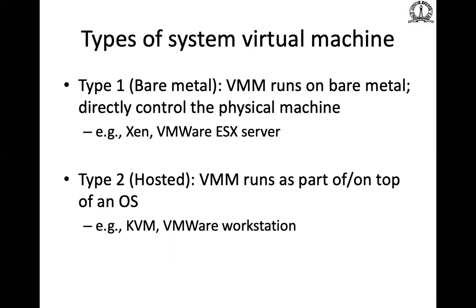There are two kinds of virtualization: bare metal and hosted. Bare metal runs directly on hardware — examples include VMware ESX Server and Xen — and is used in server environments. Hosted virtualization gives the illusion of running as a guest application on top of a host OS — examples include KVM (Linux modifications enabling VM images) and VMware Workstation (desktop edition).